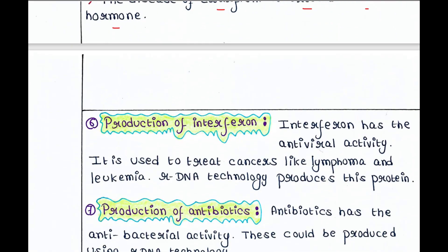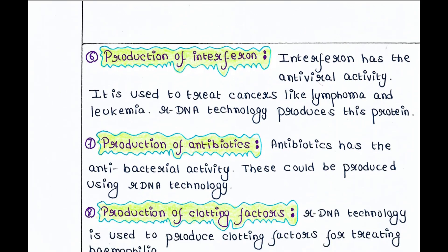Next is production of interferon. Interferon has antiviral activity and hence is used to treat different viral diseases as well as cancers like lymphoma and leukemia. rDNA technology produces this protein — you can clone this interferon gene in a vector.